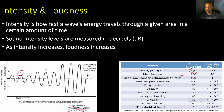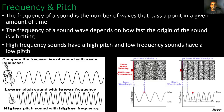Now let's look at frequency and pitch. The frequency of a sound is the number of waves that pass a point in a given amount of time, and it depends on how fast the source is vibrating. High frequency sounds have a high pitch; low frequency sounds have a low pitch. Looking at this example comparing two waves of the same loudness — the top wave has fewer waves passing through a point in a given time, giving it a lower pitch and lower frequency. The bottom wave has more waves passing, giving it a higher pitch and higher frequency.